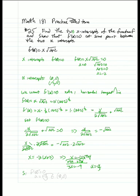So f prime of x equals 0 when x equals negative 4 thirds, which is within the interval from negative 2 to 0. And that's it.